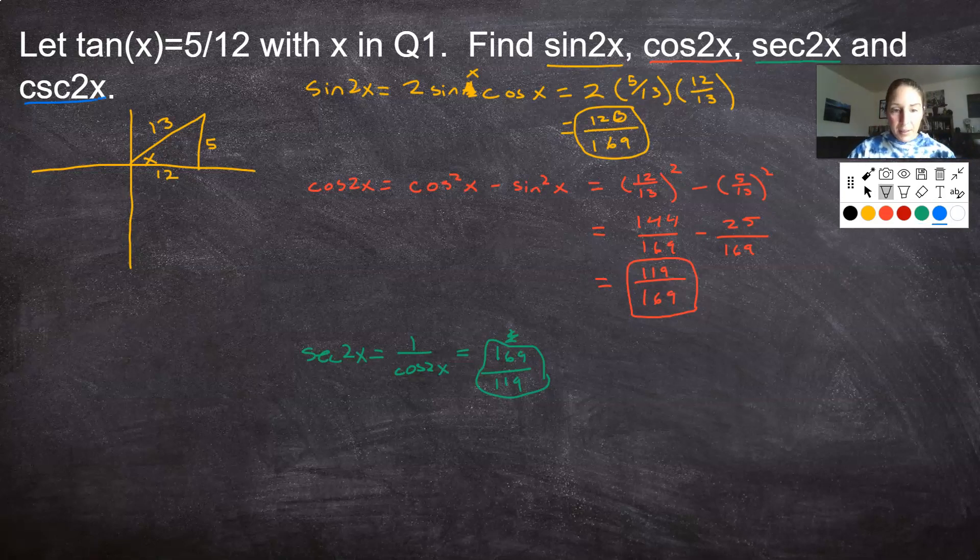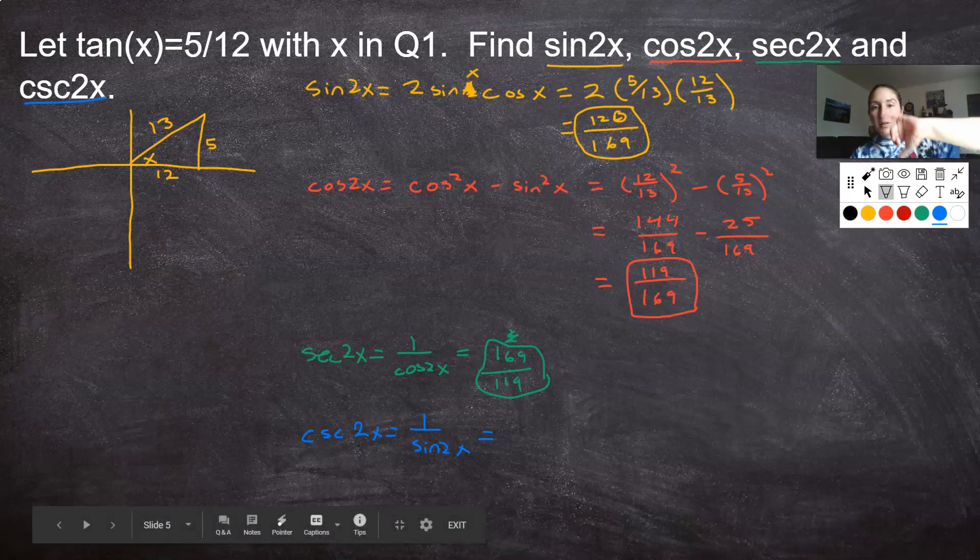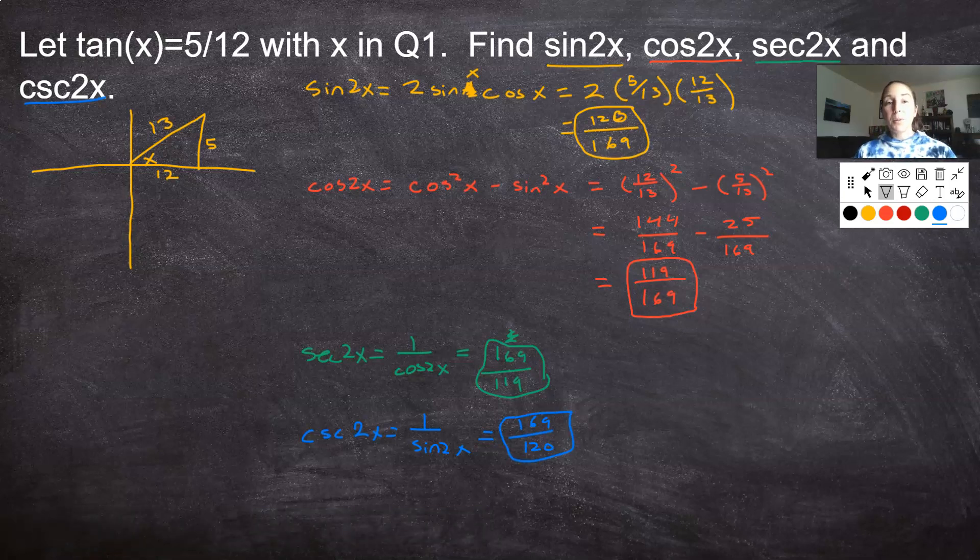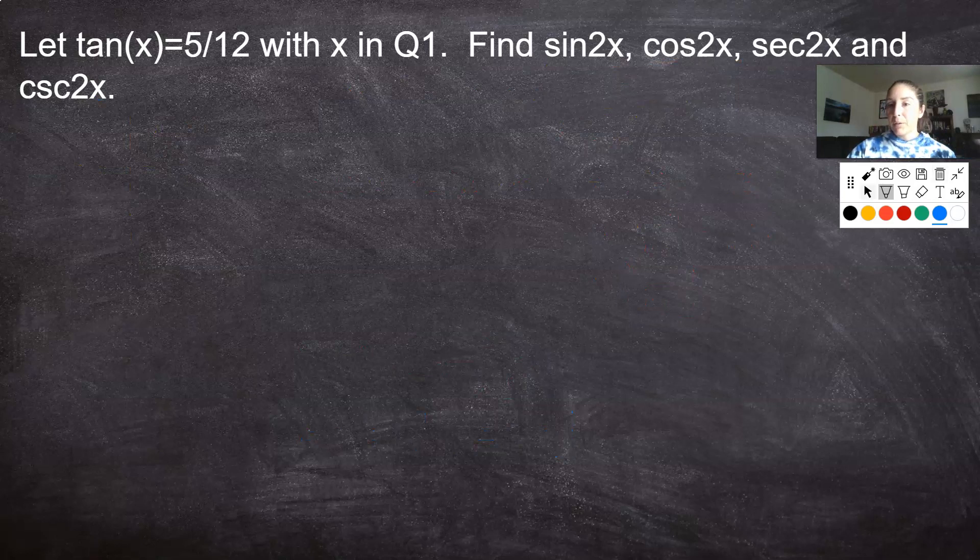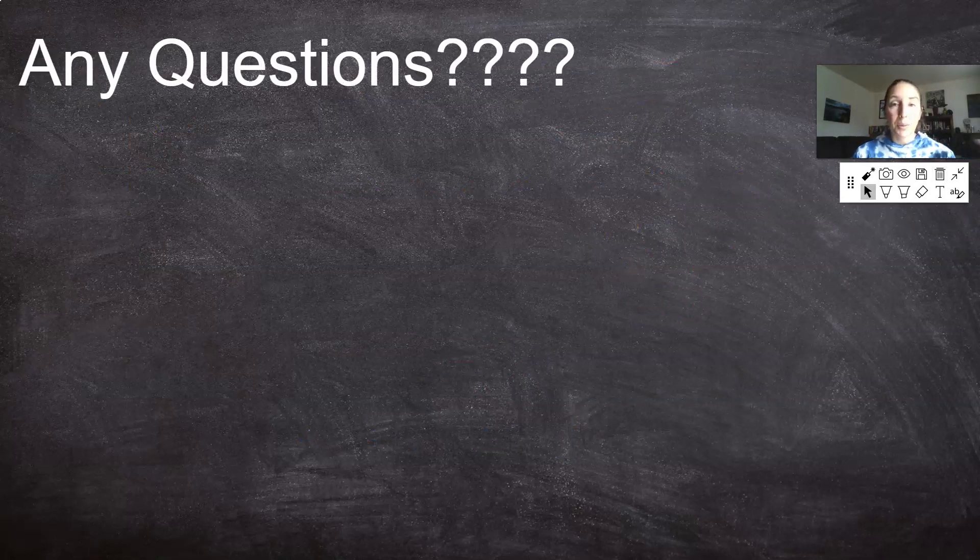And last, cosecant of 2x. As you can imagine, we're going to play the same game with this. Cosecant of 2x is 1 over sine of 2x. And I know sine of 2x already because we figured it out here. So if sine of 2x is 120 over 169, cosecant of 2x is its reciprocal. So we're just going to flip it. And it is 169 over 120. So using reciprocal identities and double angle formulas, we figured out sine of 2x in this situation, cosine of 2x, and then we hit the reciprocal identities to figure out secant of 2x and cosecant of 2x. Ratio and reciprocal identities will be your best friend.